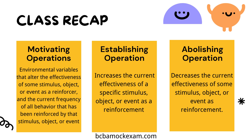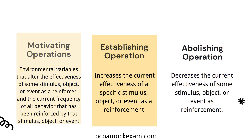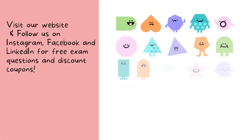Establishing operation refers to a condition or situation that increases the current effectiveness of a specific stimulus, object, or event as a reinforcement. While an abolishing operation (AO) refers to a condition or circumstance that decreases the current effectiveness of a particular stimulus, object, or event as a reinforcement. That's all for today's video.